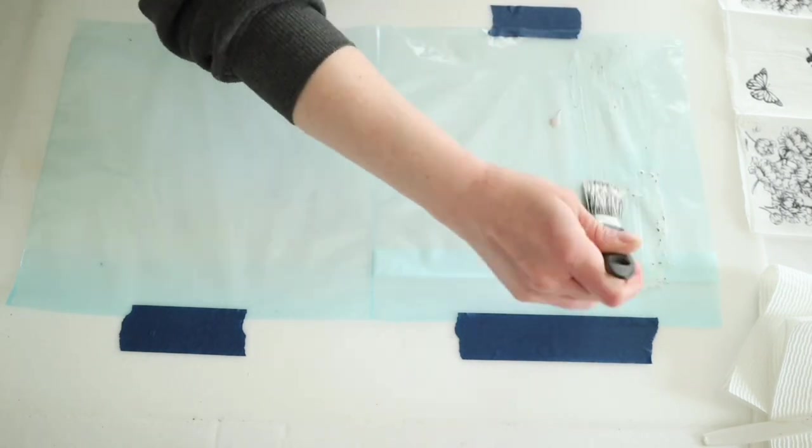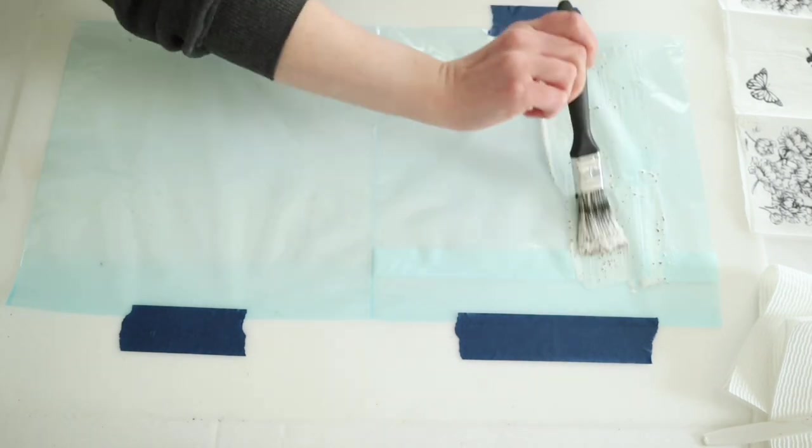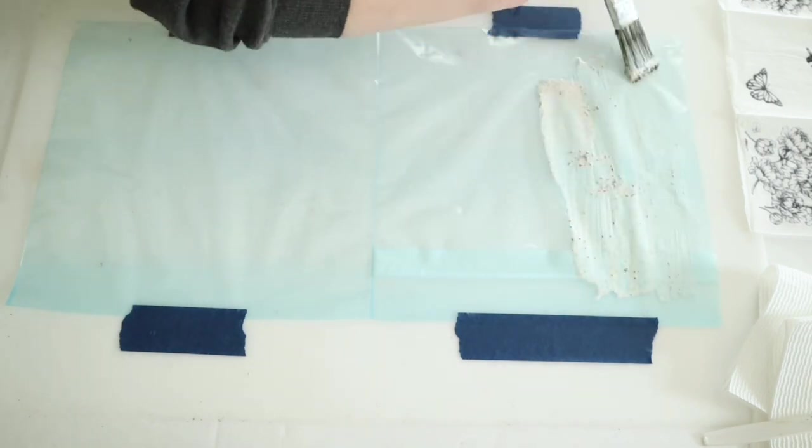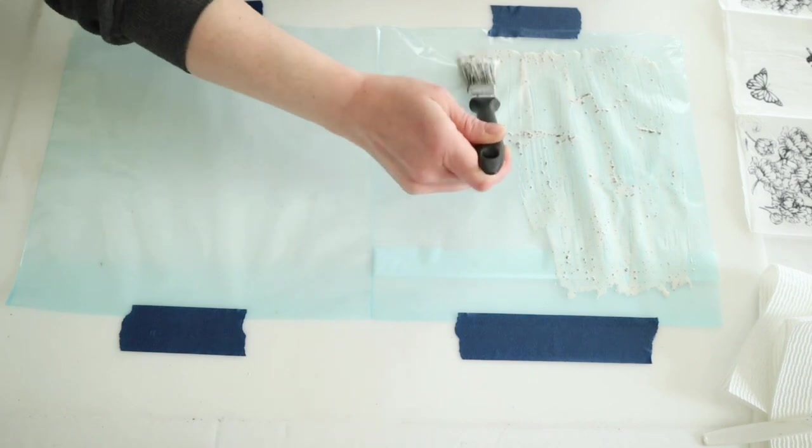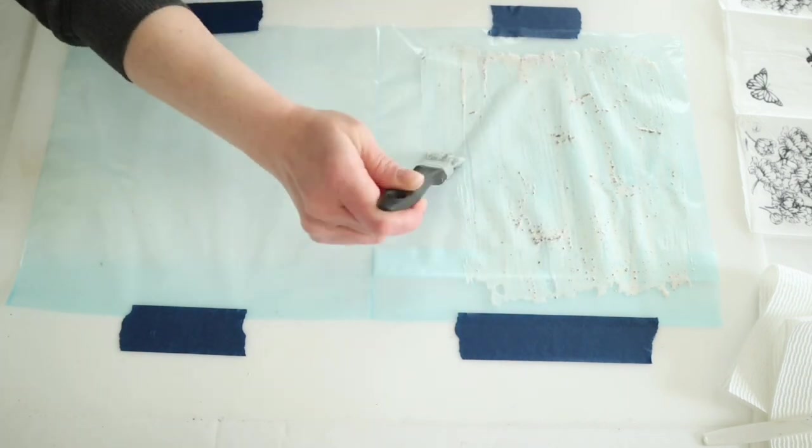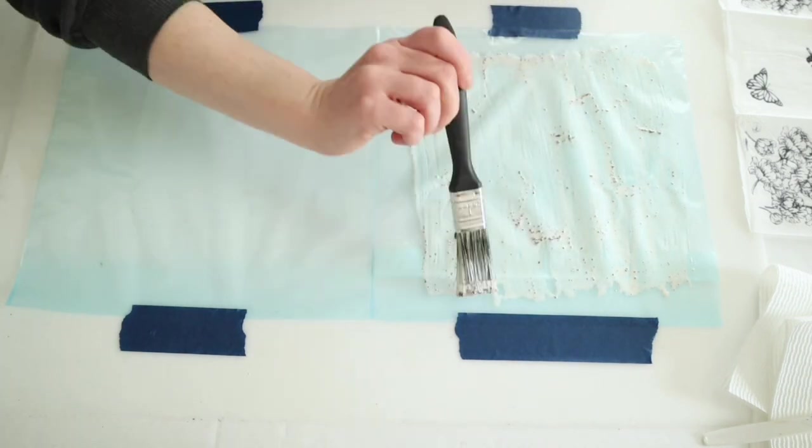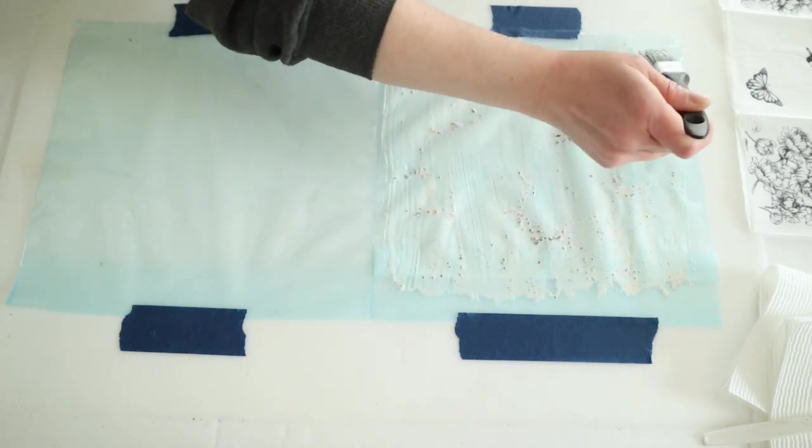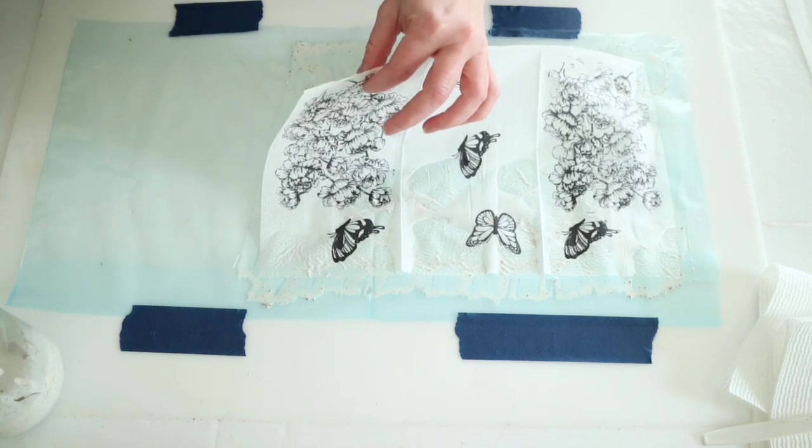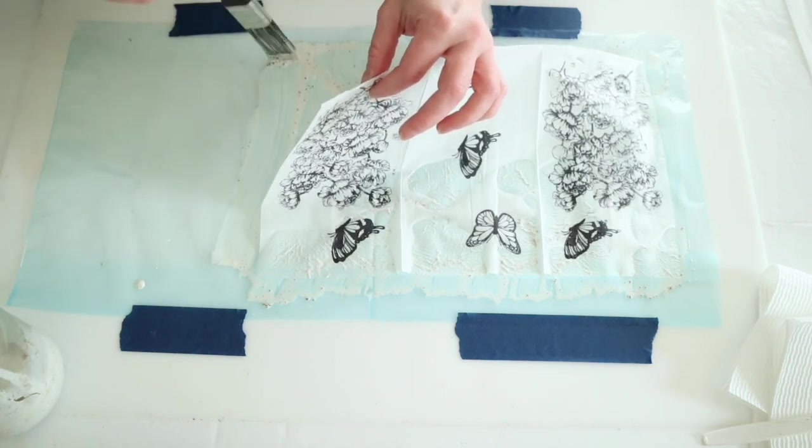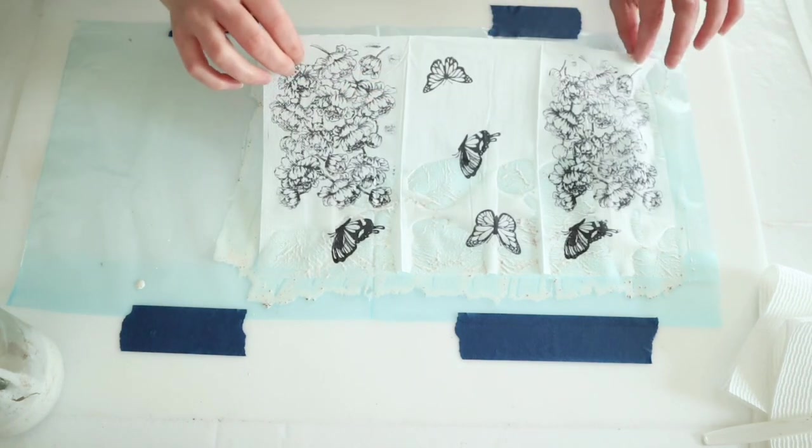Once it's mixed up, I'm taking a larger paintbrush and starting to paint this coffee Mod Podge mixture onto my plastic sheet. I'm painting it larger than my napkin. If you haven't guessed already, we are making some faux rice paper.